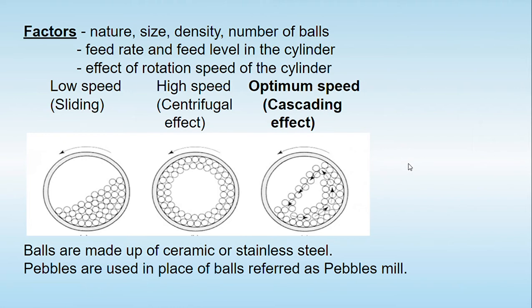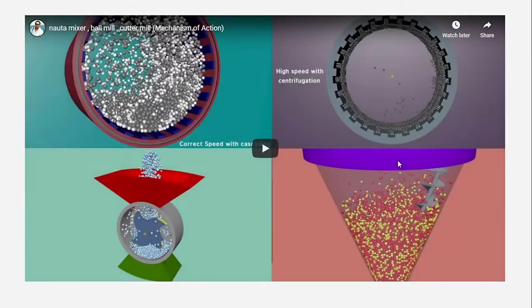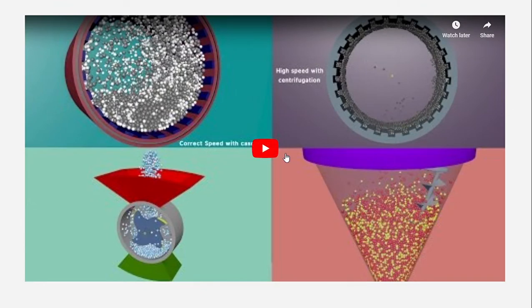A modification of this ball mill is made nowadays where the balls are replaced with pebbles, and the equipment using pebbles is known as a pebble mill.